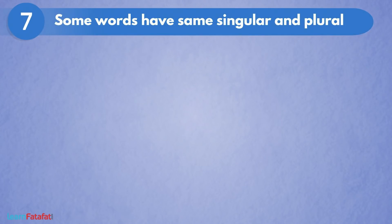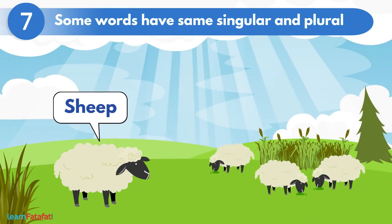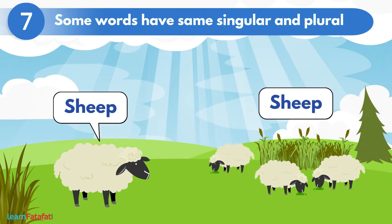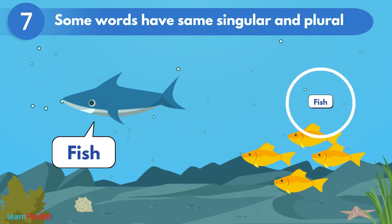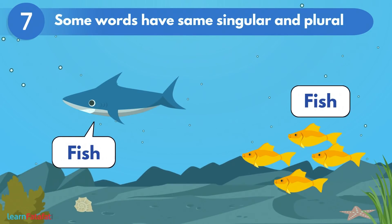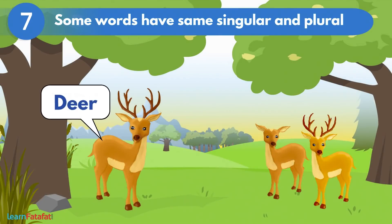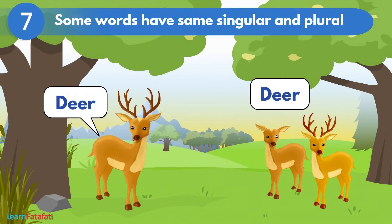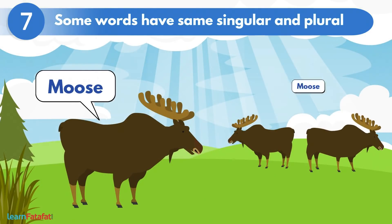Some words have the same singular and plural. कुछ word के singular और plural एकजैसे ही रहते हैं। जैसे sheep का plural sheep, fish का plural fish, deer का plural deer, moose का plural moose।